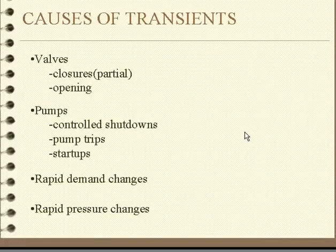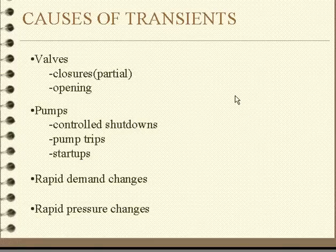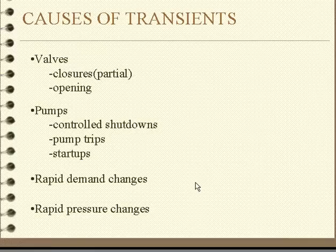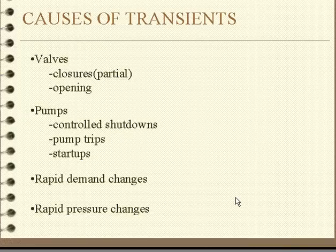I want to introduce the topic of transients in piping systems. Here is a summary of the principal causes of transients: valves opening and closing, pumps control shutdown, startups, or pump trips where there's an uncontrolled shutdown of the pump, rapid demand changes such as opening and closing fire hydrants, and rapid pressure changes — all these can introduce transients into the system.